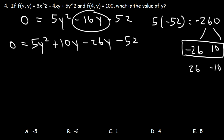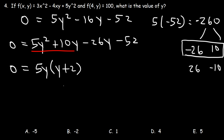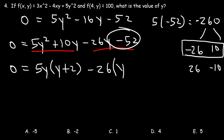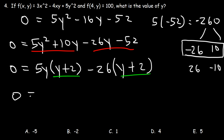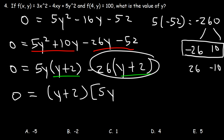Once you replace the middle term with these two terms, the next step is to factor by grouping. Take out the GCF from the first two terms — that's 5y. 5y squared divided by 5y is y, and 10y divided by 5y is positive 2. In the last two terms, take out the GCF, which is negative 26. Negative 26y divided by negative 26 is y, and negative 52 divided by negative 26 is positive 2. Notice we have a common factor: y plus 2. Factoring out y plus 2 gives 5y from the first term and negative 26 from the second.